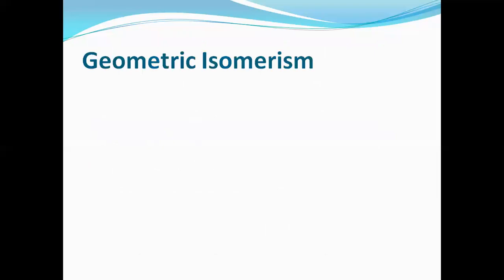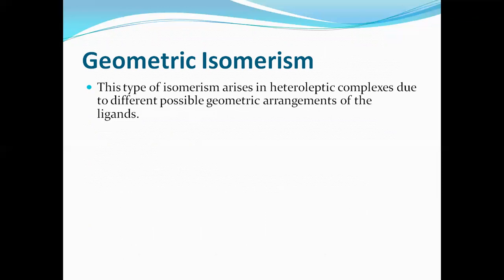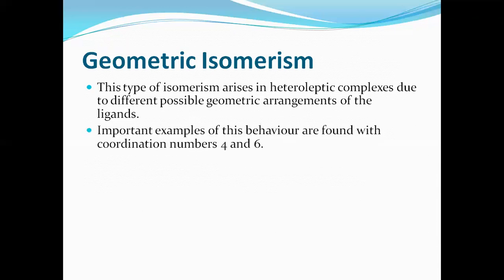First, we study geometrical isomerism, which comes under stereoisomerism. Geometrical isomerism involves two or more compounds having the same molecular formula and the same structural formula — the geometrical arrangement is also the same — but they differ in the spatial arrangement of the ligands. This mainly exists in square planar or octahedral complexes having coordination numbers 4 and 6 respectively.